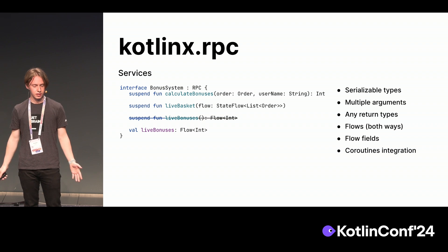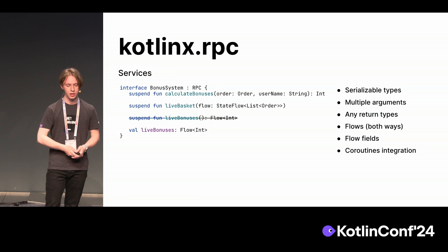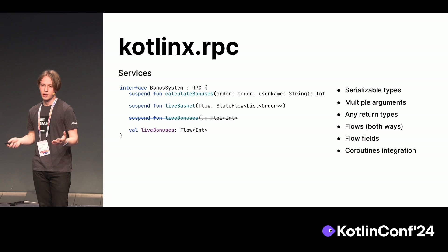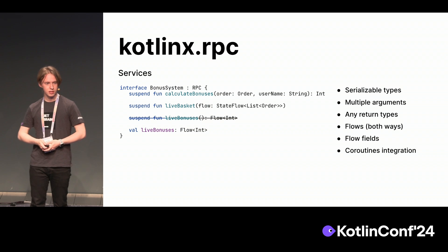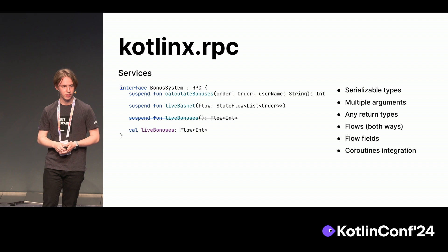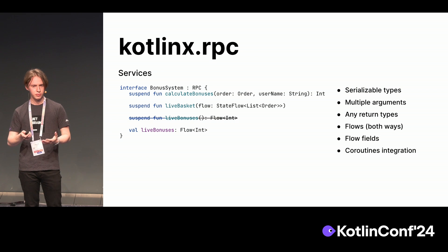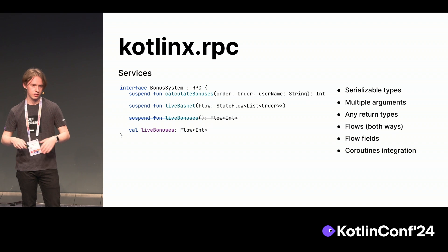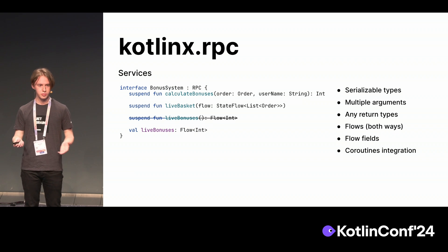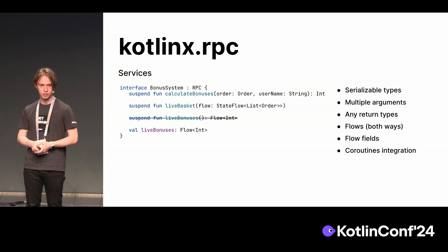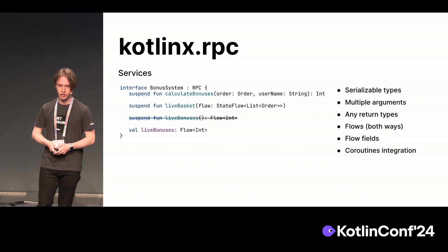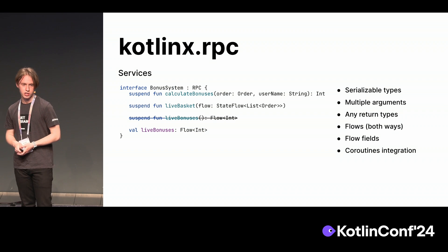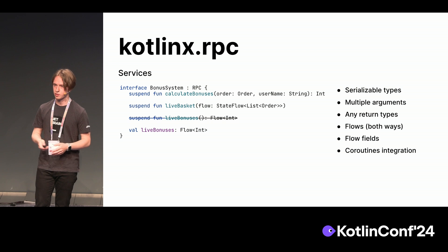We use suspend functions to perform our RPC calls, so we integrate with coroutines extensively. A simple example: you know the withTimeout function — you can make an RPC request inside it without any additional configuration. If the timeout hits, the RPC request will just be cancelled. All the heavy lifting is done by the library, and you just use regular Kotlin code with coroutines as you would in a simple application without any networking or RPC services.